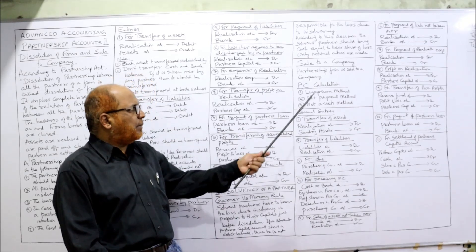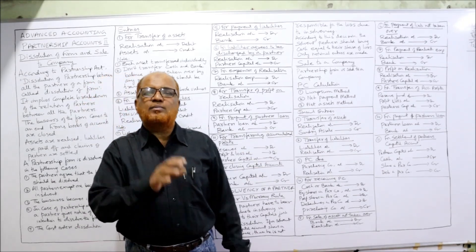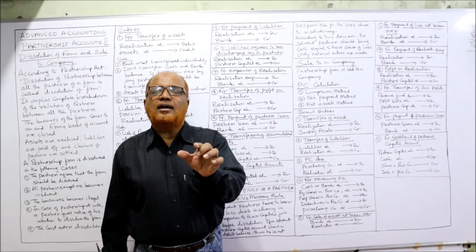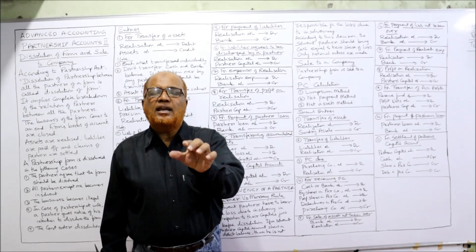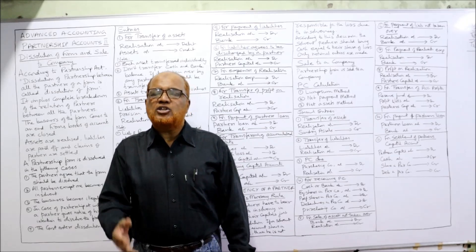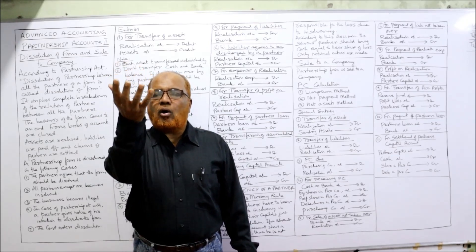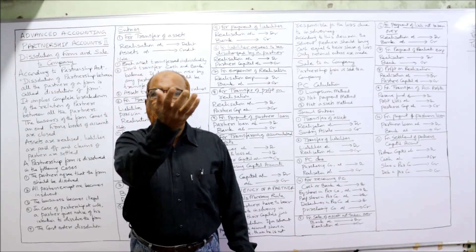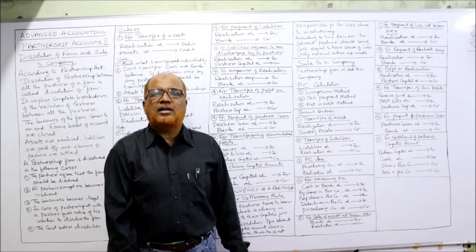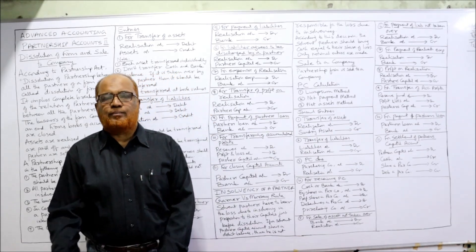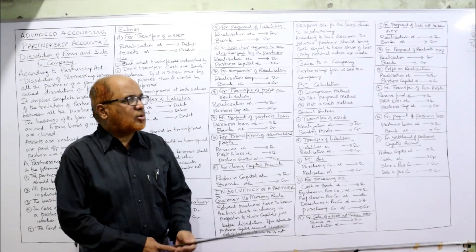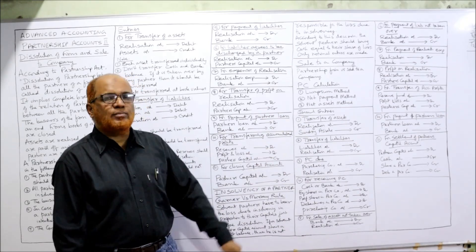That is the net payment method — adding up how much cash is paid, how much shares are issued, and how much debentures are issued. In the net assets method, we calculate the net worth of the partnership: take all the assets of the partnership minus all the outside liabilities, and we get the net value of the business. That is the net assets method. These three methods are applied to calculate the purchase consideration.